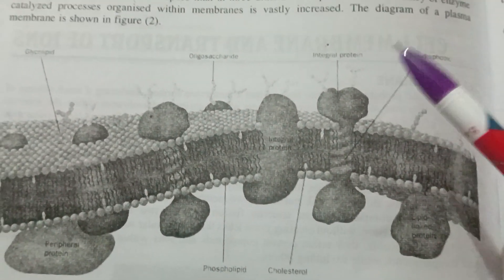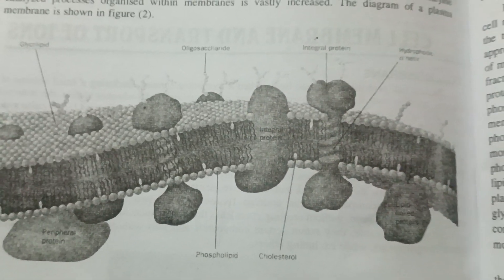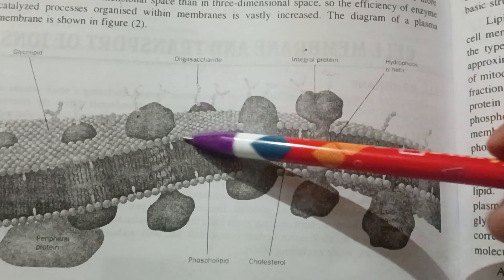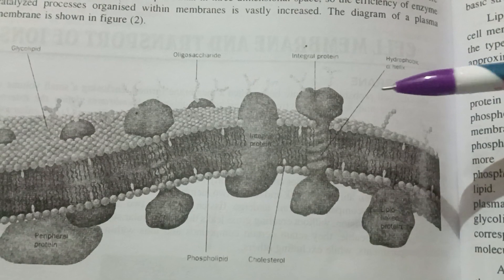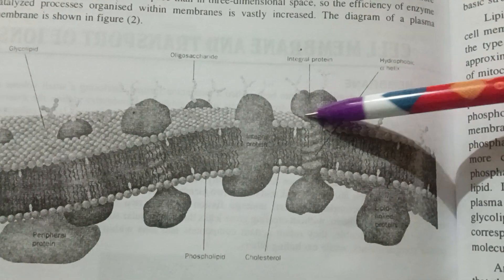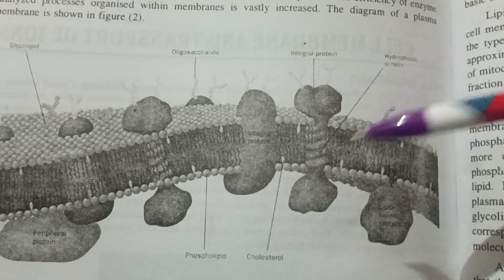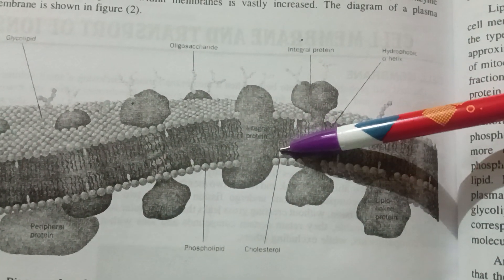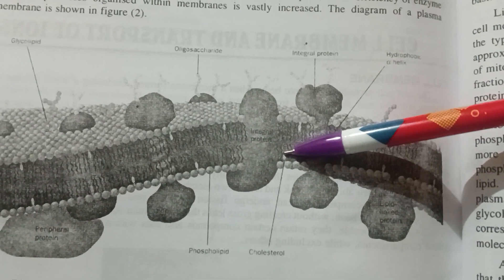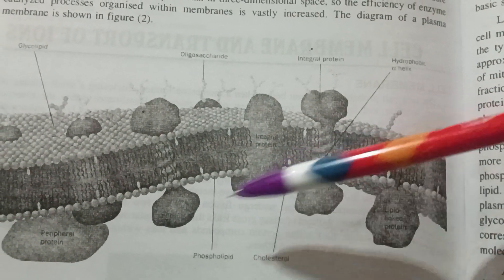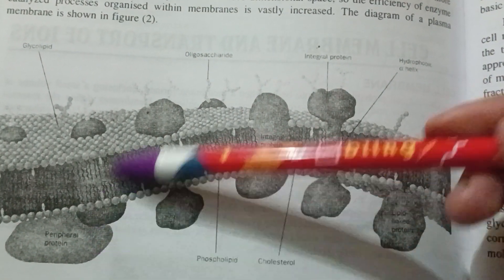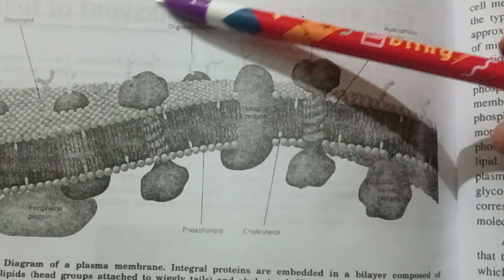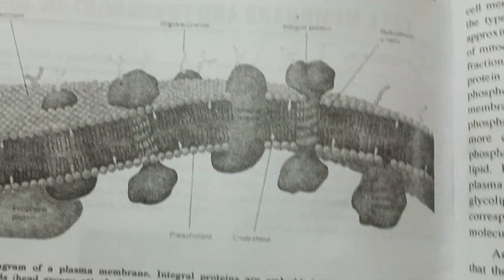This plasma membrane diagram will show you its components: oligosaccharide, integral protein, peripheral protein, phospholipid, cholesterol, and glycolipid. This is the diagram of the plasma membrane.